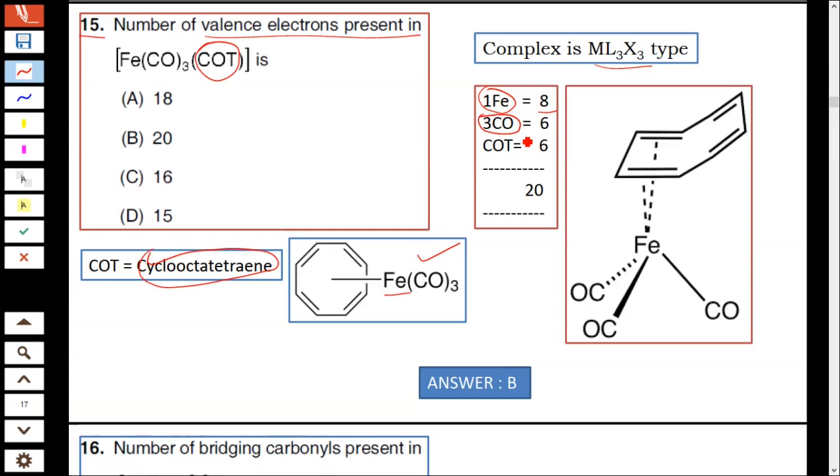Three CO, each carbon monoxide gives two electrons, two times three equals six electrons. This cyclo-octa-tetraene gives six electrons, not eight electrons. It gives six electrons due to ring flipping. Hence total 20. It contains 20 valence electrons, not 18, 16, or 15 valence electrons.